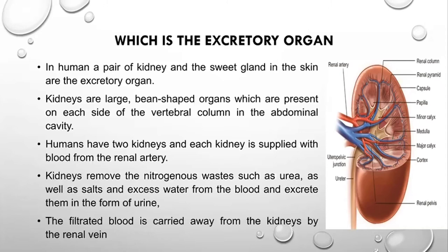The bean-shaped kidneys are present on either side of the vertebral column in the abdominal cavity. The human has two kidneys, and each kidney receives blood from the renal artery, which branches directly from the aorta. Similarly, the renal vein emerges from both kidneys and joins the inferior vena cava, returning deoxygenated blood to the heart for gaseous exchange.